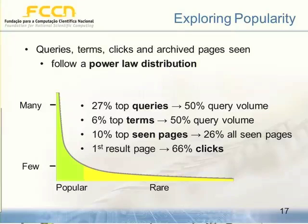We also analyzed whether there is repetition in queries, terms, clicks, and archive page views. What we discovered was that all of these follow a power law distribution. This means there are very popular queries repeated many times — a small set repeated many times — and then a large set repeated just a few times. Specifically, 27% of the top queries represent 50% of the query volume, and 6% of the top terms represent the same 50% of query volume. By caching just 6% of the top terms, we could cover 50% of the query volume — representing a great saving for the system.